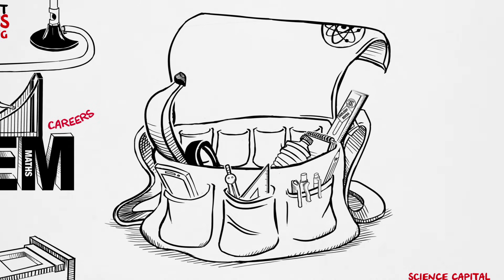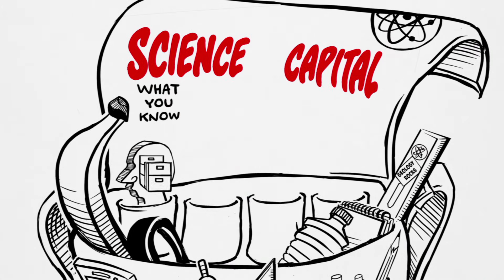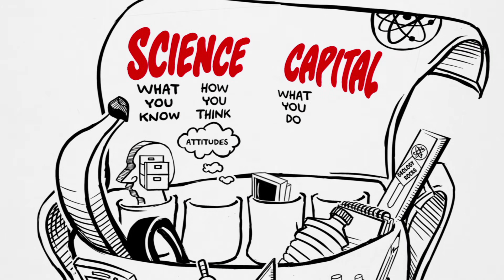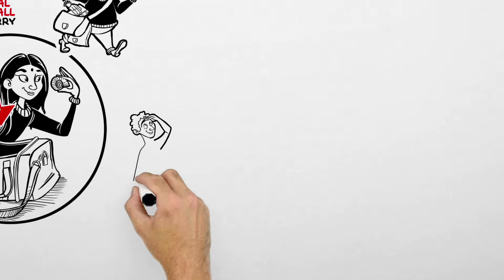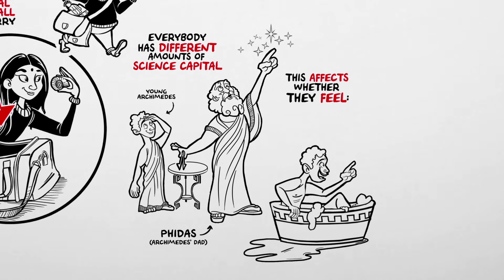The science capital each person has splits into four main types: what you know, how you think, what you do and who you know. Everyone has different amounts of science capital, and this affects whether they feel science is for me or not.